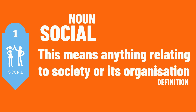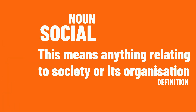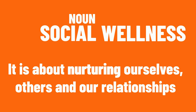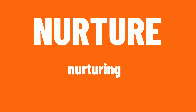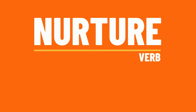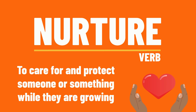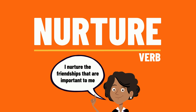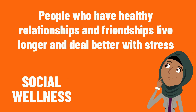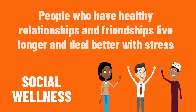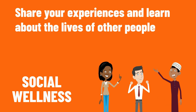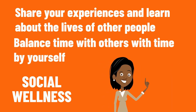First up, let's have a look at the word social. This noun means anything relating to society or its organizations, and it means your relationships with other people like your friends. Social wellness is all about nurturing ourselves, others, and our relationships. Nurturing comes from the verb nurture, which means to care for and protect someone or something while they are growing. An example sentence: I nurture the friendships that are important to me. People who have healthy relationships and friendships live longer and deal better with stress. It is important to share your experiences, learn about the lives of other people, and balance time with others with time by yourself.